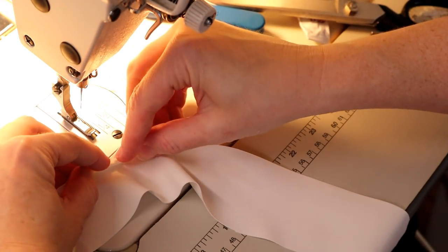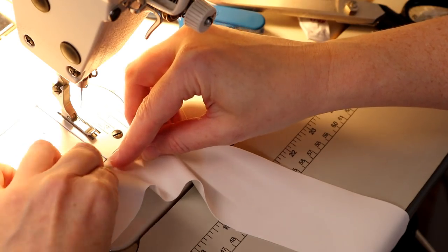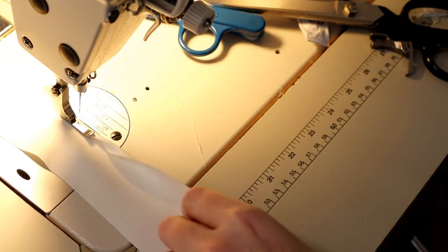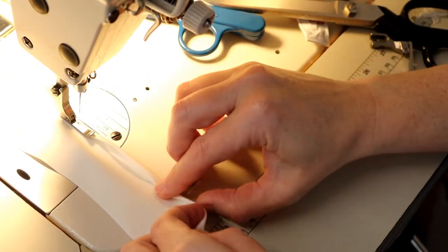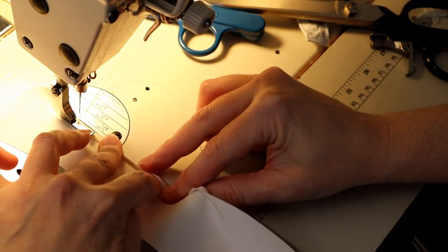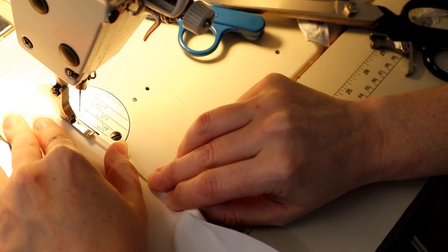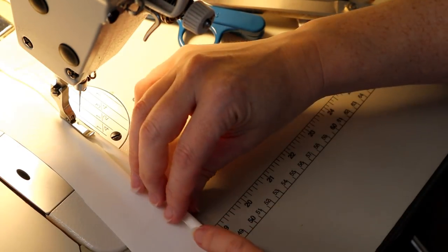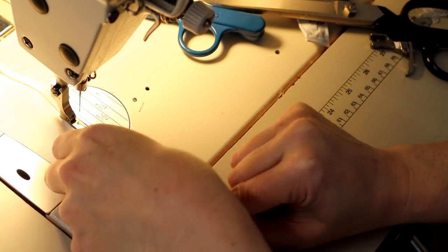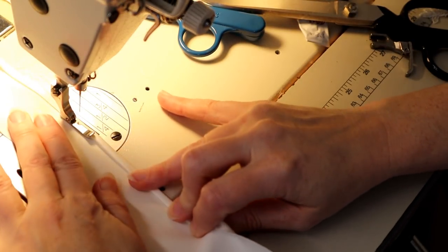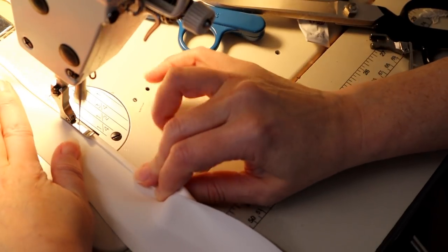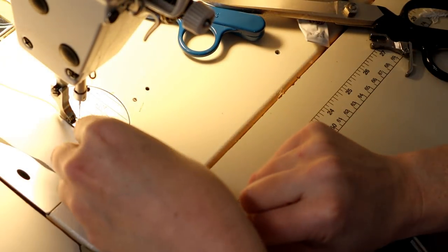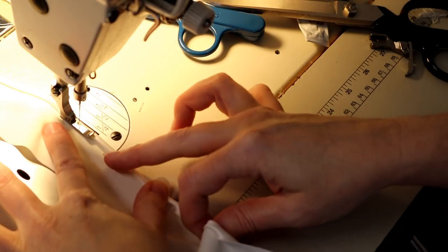If you've watched my other rolled hem tutorial, this is basically the technique I go over in that video. Someone came after me in the comments saying this does not work if it's sewn on the bias. Well, this is sewn on the bias and it works fine. This is done in one step, but I want to reiterate what's important: use a small needle.